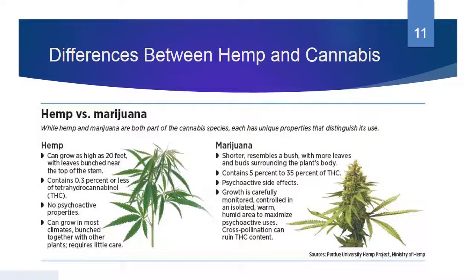Let's talk about the differences between hemp and cannabis. Hemp can grow as high as 20 feet, with leaves bunched near the top of the stem. Hemp contains 0.3% or less of THC — tetrahydrocannabinol — with no psychoactive properties. It doesn't make you feel high, and it can grow in most climates, bunched together with other plants, requiring little care. Marijuana, on the other hand, is shorter, resembles a bush with more leaves and buds surrounding the plant's body.